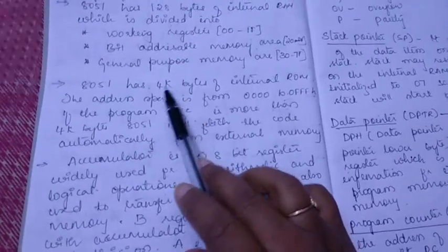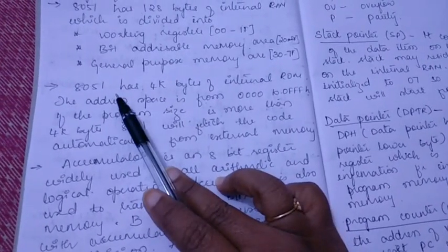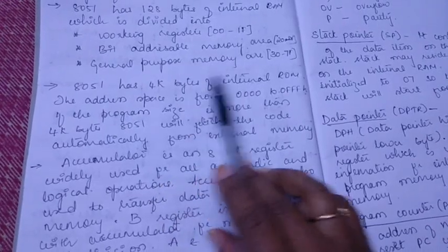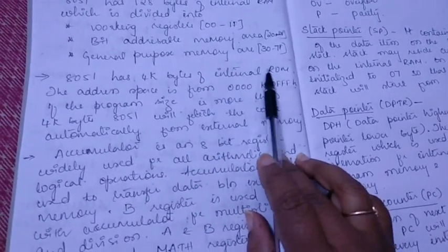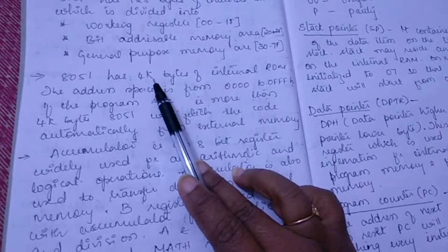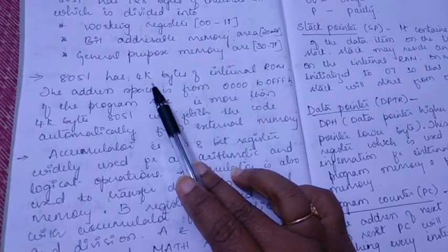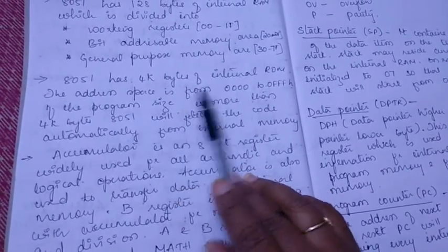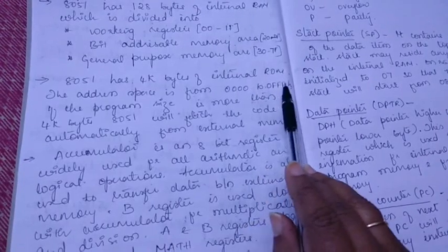The next features are 8051 has 4 kilobytes of internal ROM. The internal ROM of 8051 is 4 kilobytes and the address space is from 0000 to 0FFFH.